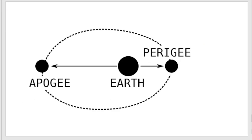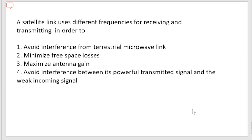The next question: a satellite link uses different frequencies for receiving and transmitting in order to — we already discussed uplink and downlink frequencies. The options are: avoid interference from terrestrial microwave links, minimize free space losses, maximize antenna gain, or avoid interference between its powerful transmitted signal and the weak incoming signal. The correct answer is option four.